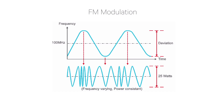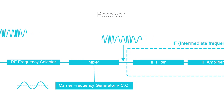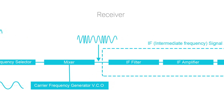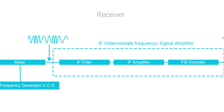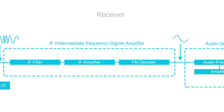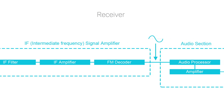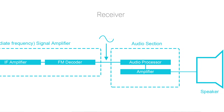In FM, the carrier is deviated in relationship to the amplitude of the audio. The frequency modulated signal is then amplified and transmitted. In the FM receiver, the FM signal that was transmitted, plus any noise picked up along the way, is converted back into analog audio. De-emphasis can reduce some of the noise picked up during transmission, but it cannot remove it altogether. This audio, plus any of the noise that was picked up during transmission, will be output via the speaker.